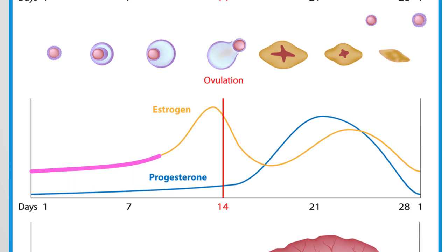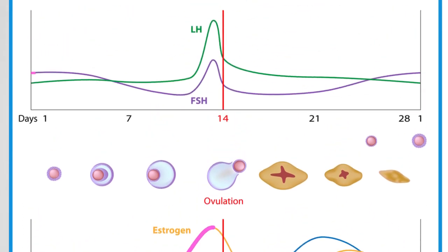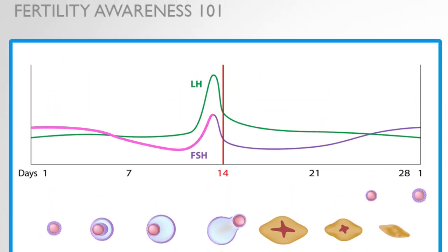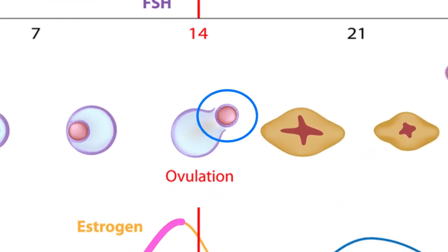After approximately 12 days of the 14-day follicular phase, estrogen reaches its highest level, and then there is a surge of FSH and another hormone, the luteinizing hormone, or LH. This is called the LH surge, and 24 to 36 hours after the LH surge, ovulation occurs.